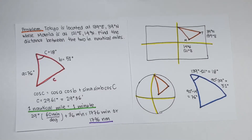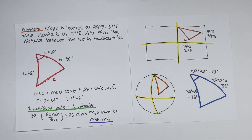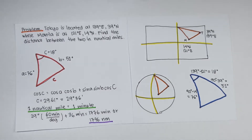Now let's learn how to solve the distance between two locations. Tokyo is located at 139 degrees east and 39 degrees north, while Manila is at 121 degrees east and 14 degrees north. Find the distance between the two in nautical miles.